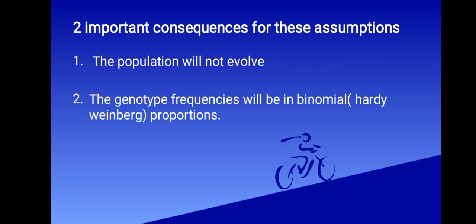The second important consequence of these assumptions is the genotype frequencies will be in binomial, that is Hardy-Weinberg proportions. That is, genotypic frequencies after one generation of random mating will be a binomial function of allele frequencies. Hardy-Weinberg principle allows us to describe a population by the frequencies of the alleles at a locus rather than by the many different genotypes that can occur at a single diploid locus.